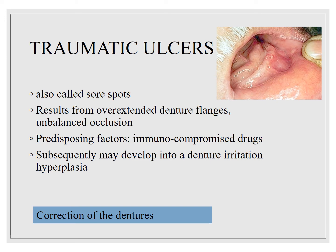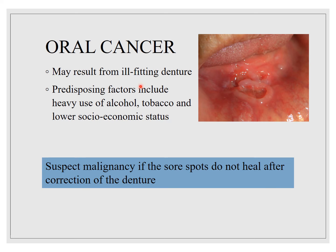Coming to oral cancer — it may result from ill-fitting dentures. Predisposing factors include heavy use of alcohol, tobacco, and lower socioeconomic status. Suspect malignancy if sore spots do not heal after correction of the denture, especially if they develop into a hardened, softer, or cystic structure.